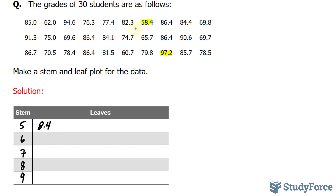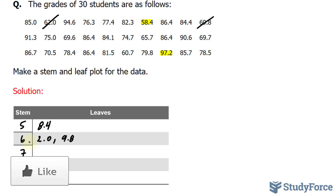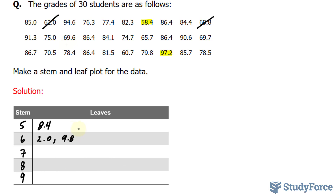Let's move on to the 60s. We have a grade that is 62, so I'll write down 2.0. Each time a grade is written, it's nice to scratch it off from the list so you don't get confused. We also have 69.8, so I'll write down 9.8. Notice that they're not in order — we sometimes arrange the leaves in numerical order, but that's not always necessary; it depends on what your teacher is looking for. 69.6 will be written as 9.6. If you do the rest correctly, you should end up with the following.